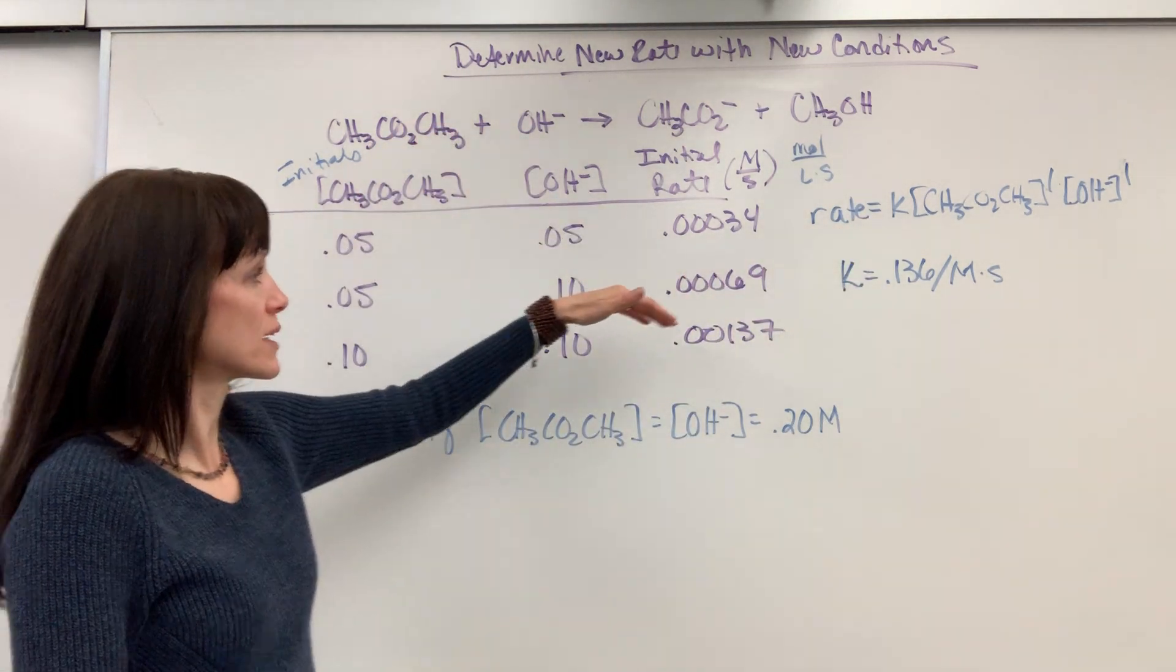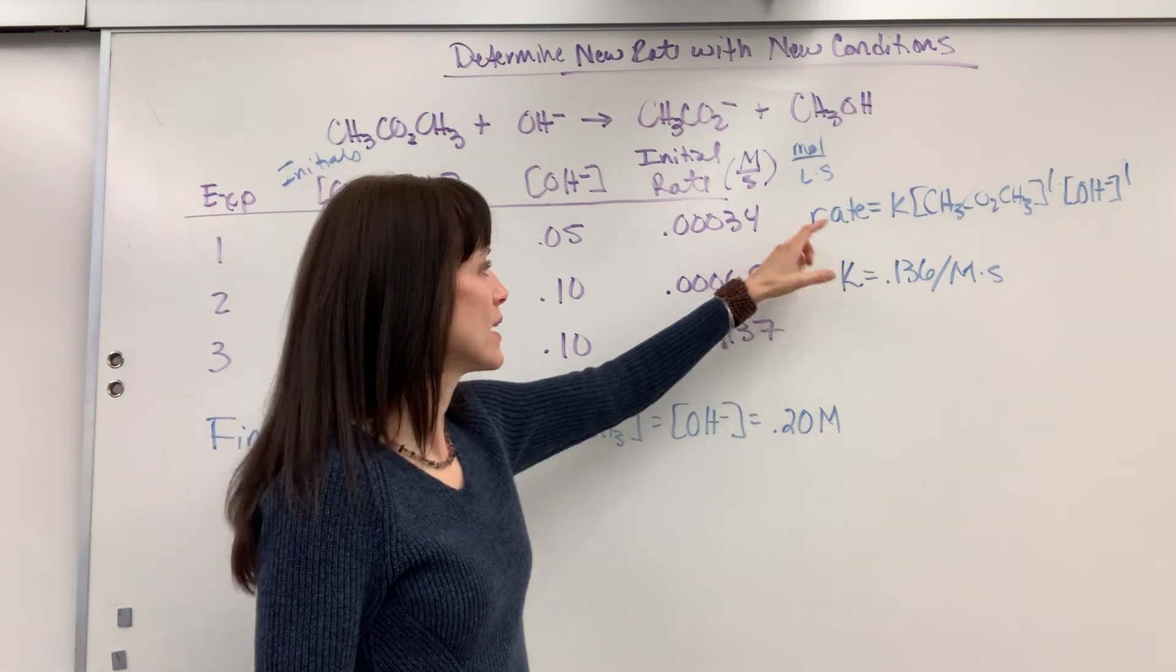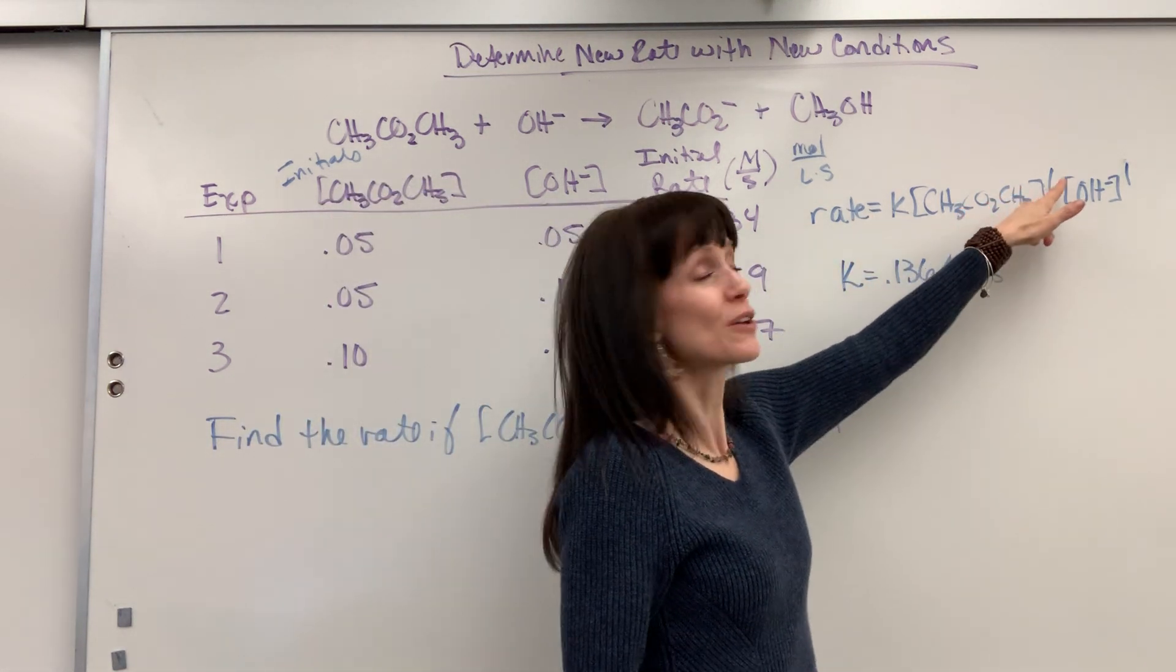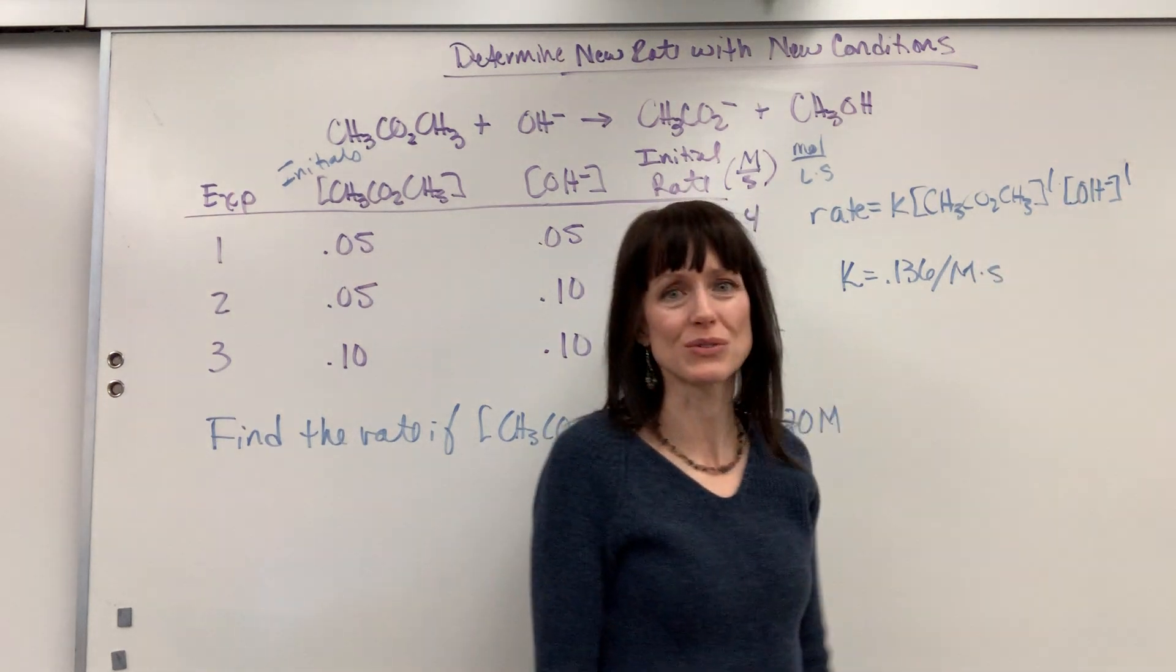When methyl acetate reacts with hydroxide, here's the rate law. Rate equals K times the concentration of methyl acetate to the first order times the concentration of hydroxide to the first order.